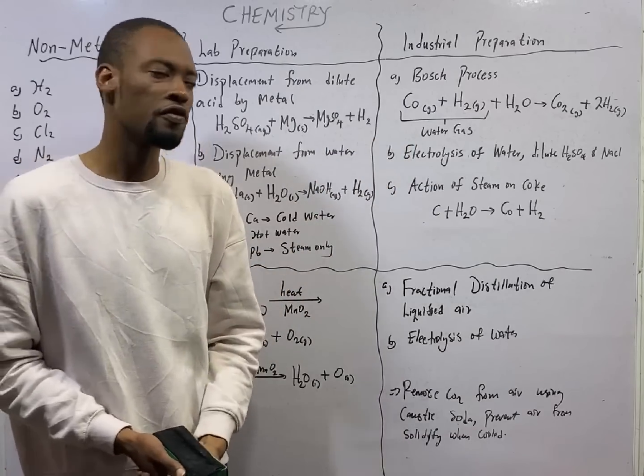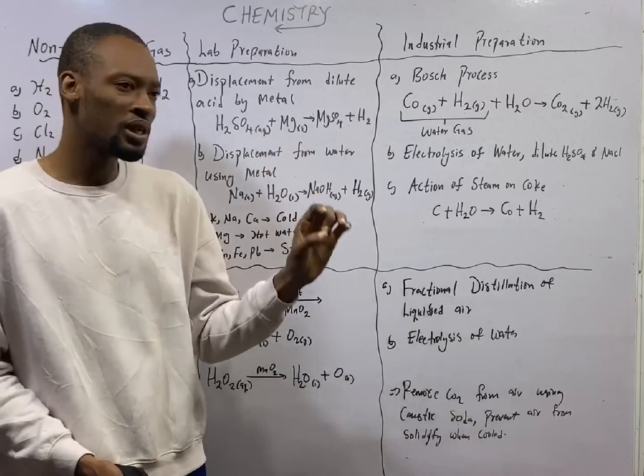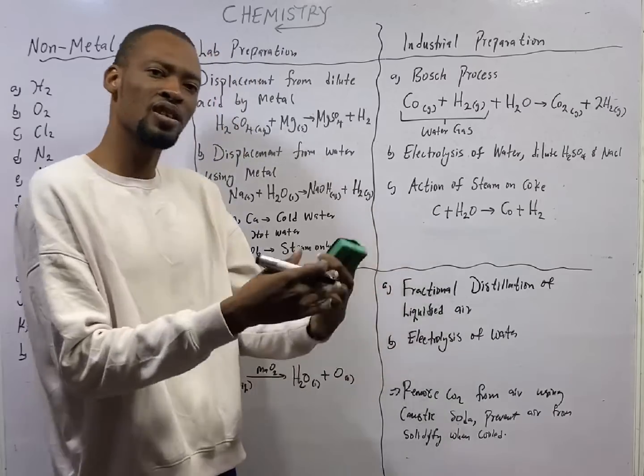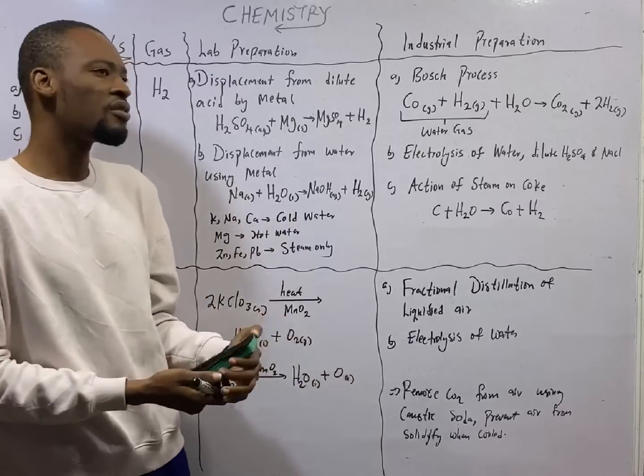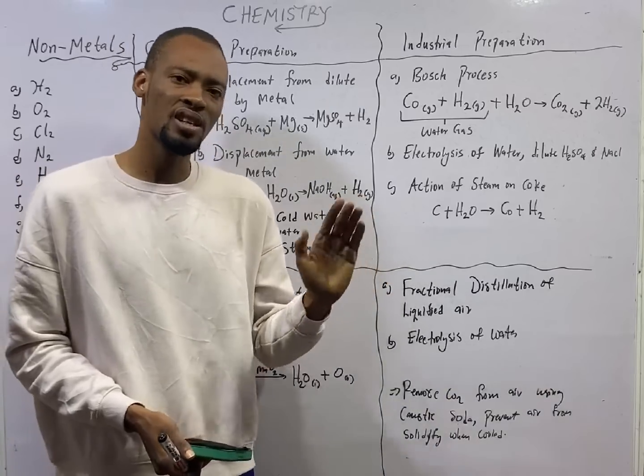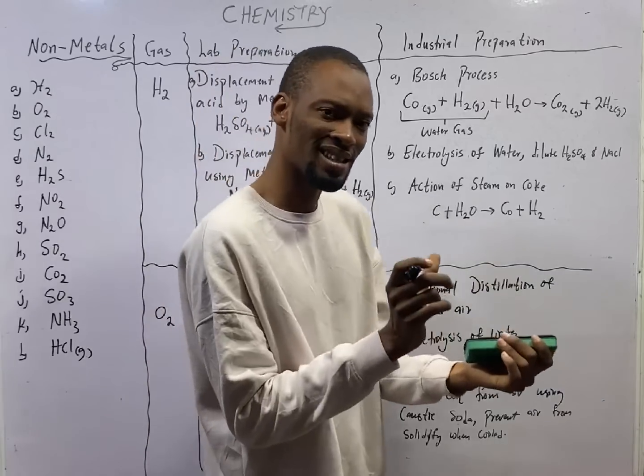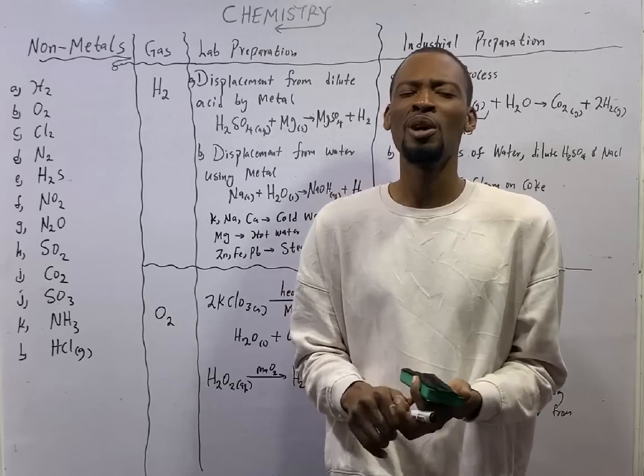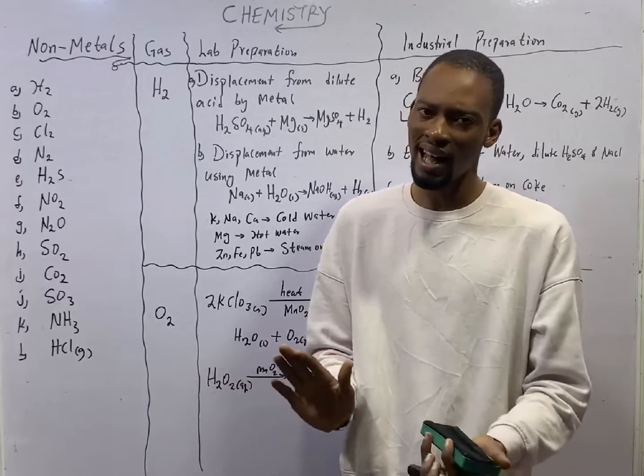Hydrogen gas will be given off. The second way is displacement from water using metal. Whenever metal reacts with water, hydrogen gas will also be given off. For example, sodium in solid state reacts with water in liquid state to give us sodium hydroxide which is a base plus hydrogen gas.